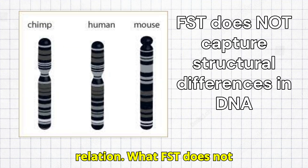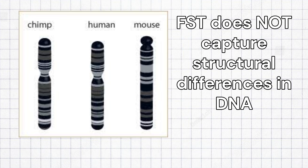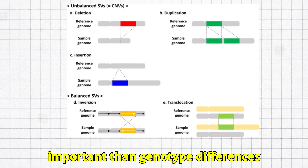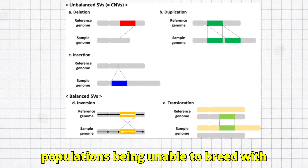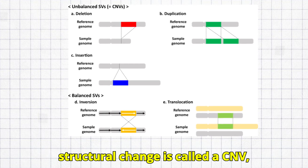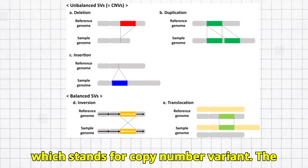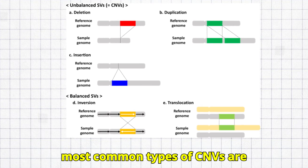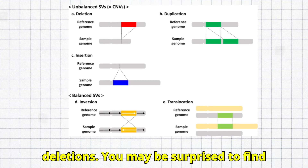What FST does not measure is structural differences. Structural differences are arguably more important than genotype differences because they are what leads to certain populations being unable to breed with one another. The most common type of structural change is called a CNV, which stands for copy number variant. The most common types of CNVs are duplications, insertions, and deletions.